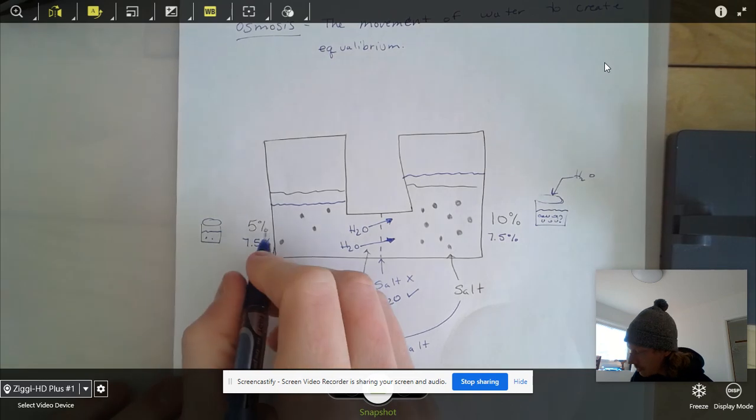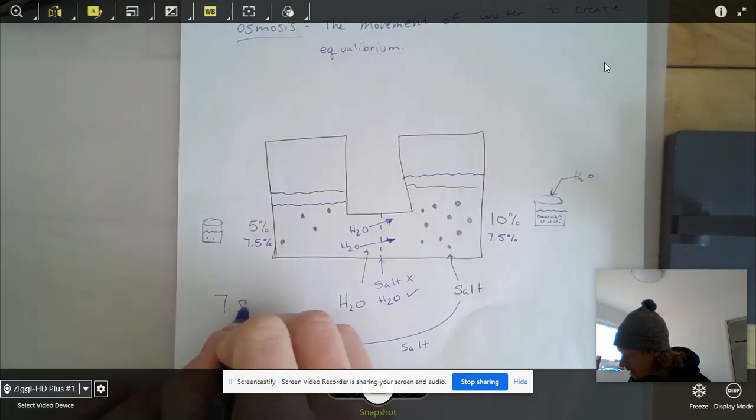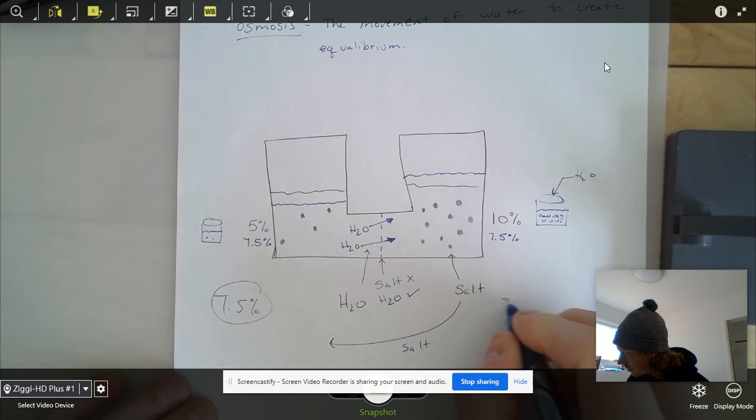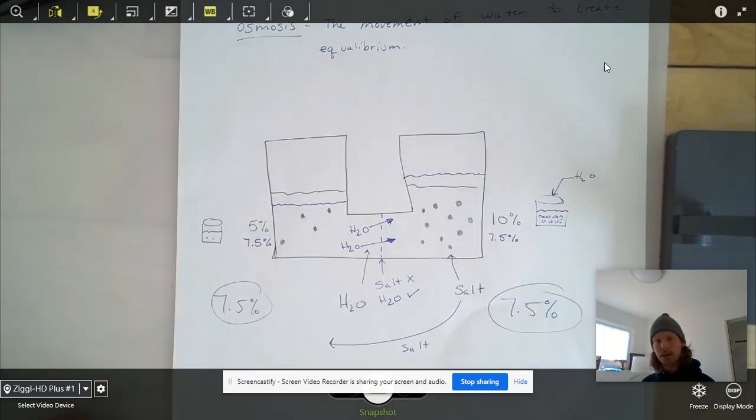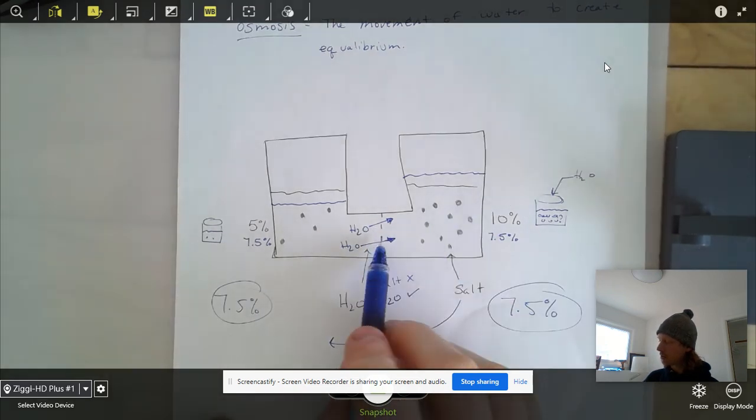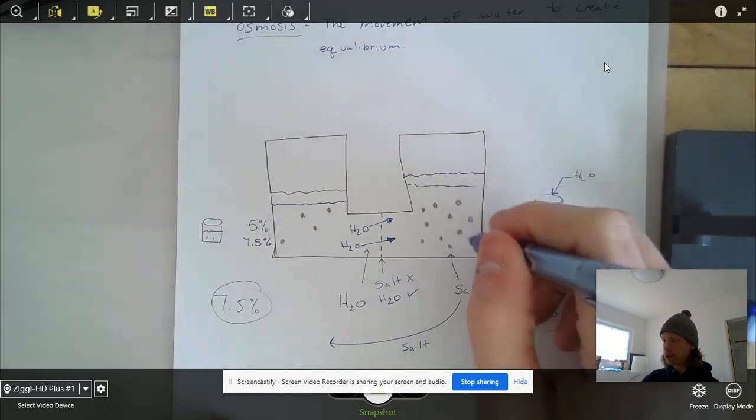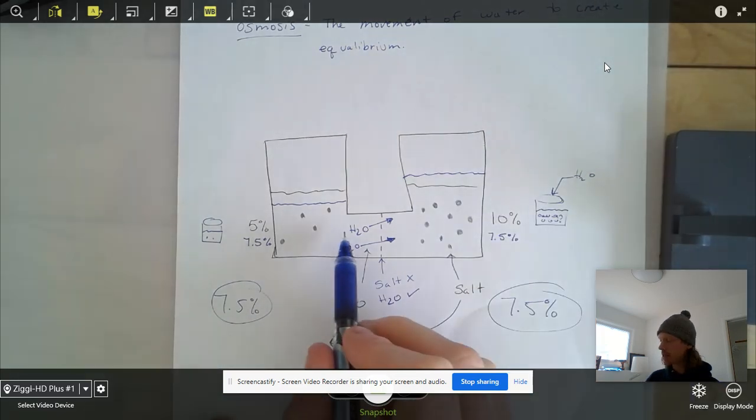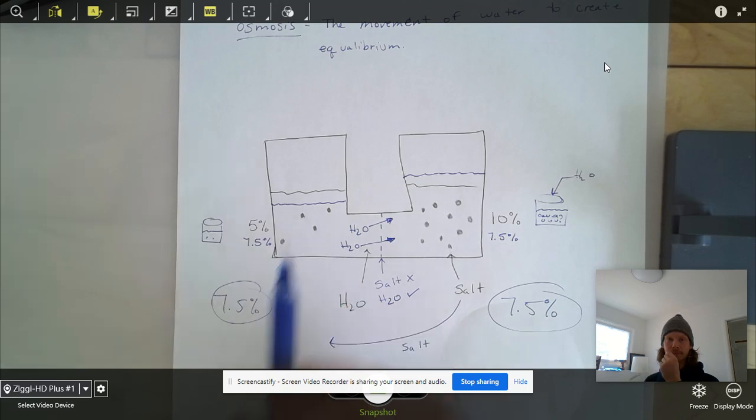So now we have 7.5% on the left side, we have 7.5% on the right side, now we have our balance. And it has everything to do with the water moving across. In the last video and last exercise, we were talking about the solute moving. Now we're talking about the solvent moving. So this is osmosis is the movement of water. The movement of water to create equilibrium. So this water moves across. This concentration actually goes down at the same time when this water leaves. This concentration actually goes up.